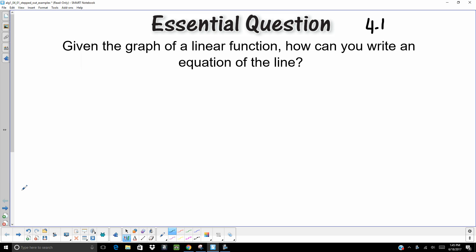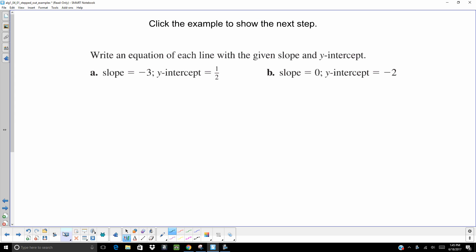All right. Today we are doing Chapter 4, Section 1 out of the Algebra 1 book. Our essential question is, given the graph of a linear function, how can you write an equation of the line? So, we're just going to jump right into it. We want to write an equation of a line with the given slope and the y-intercept.